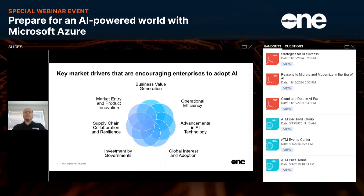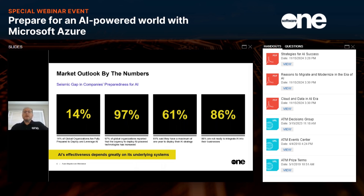These drivers are leading to a race among enterprises to adopt and implement AI in their operations. It seems possible that within the next three years, anything in the technology, media, and telecommunications space not connected to AI will be considered obsolete or ineffective. A recent study launched by Cisco highlights the seismic gap in customers' preparedness for AI. This study reveals only 14% of global organizations are fully prepared to deploy and leverage AI.